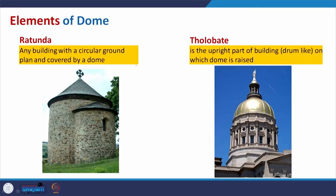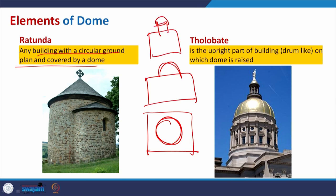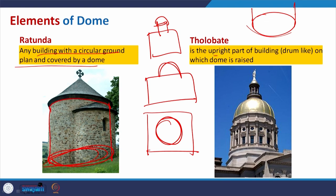Rotunda is basically any building with a circular ground plan covered by a dome. In many buildings a dome is placed at the center, which may look like this with a drum. The plan itself is a cylindrical form — a circular plan — and on top of it you have the dome. The tholobat is the upright drum-like part of a building on which the dome is raised.